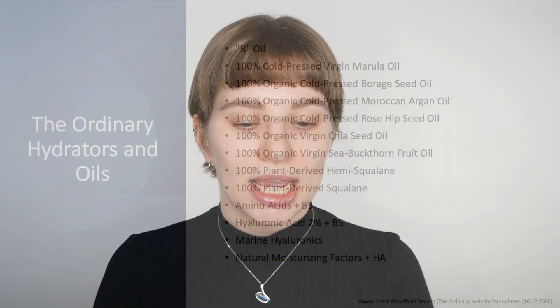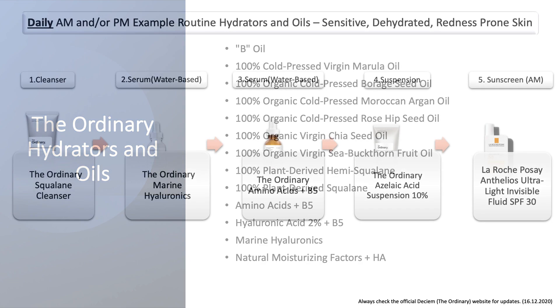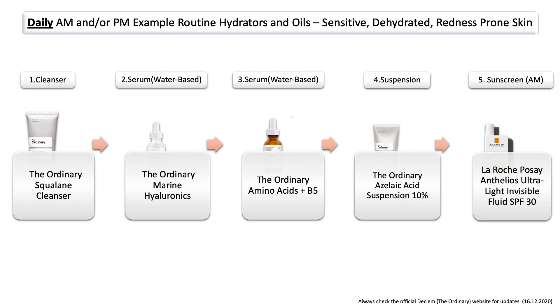Now let's go over what you CAN use with the Ordinary Azelaic Acid Suspension. Depending on the products you choose, this can be an AM or PM skincare routine. You can use the Azelaic Acid Suspension with any of The Ordinary oils or hydrating serums, including amino acids, hyaluronic acid, marine hyaluronics, and their natural moisturizing factors. For example, a routine using marine hyaluronics and amino acids together with the Azelaic Acid Suspension works well. If using this routine in the morning, don't forget your sunscreen.